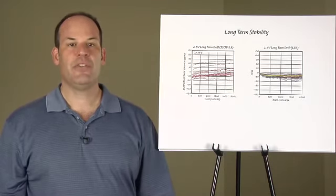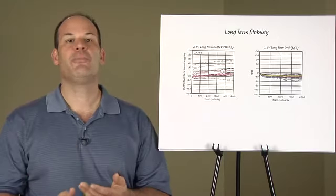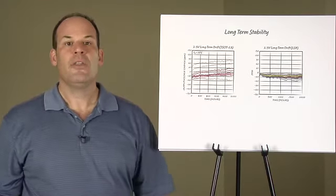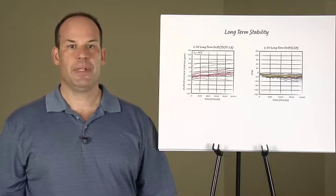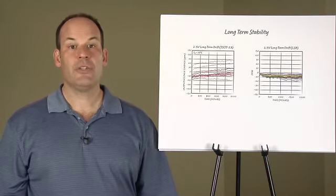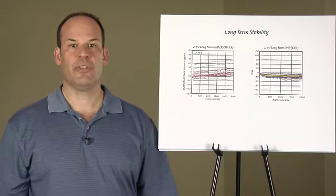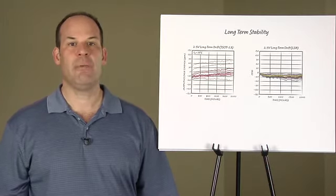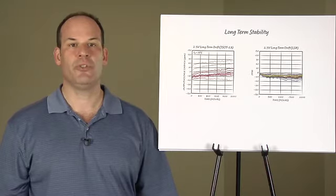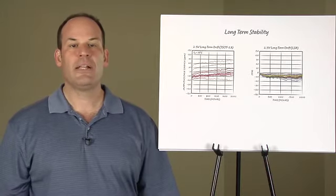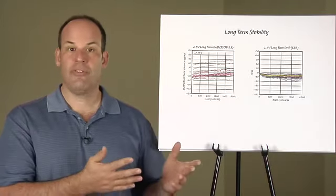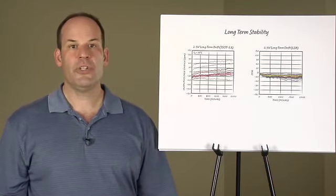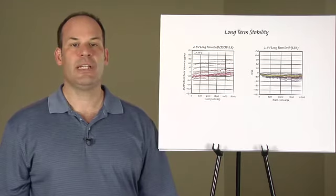As product specifications tighten and calibration periods lengthen or calibration is eliminated entirely, there is a need for improved long-term stability. It has been widely assumed that the mechanism for long-term drift has been wear out or aging. However, this is unlikely for the types of devices and bias conditions used in voltage references. More likely, the cause is a combination of mechanical effects and mobile charge.